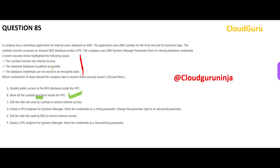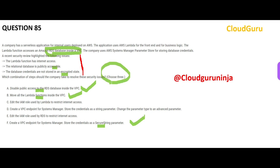The second issue is your relational database is publicly accessible — you need to disable public access to the RDS, since your relational database is on RDS inside a VPC. The third issue is that your database credentials are not stored in an encrypted state. To store them in an encrypted state, you use a SecureString parameter.